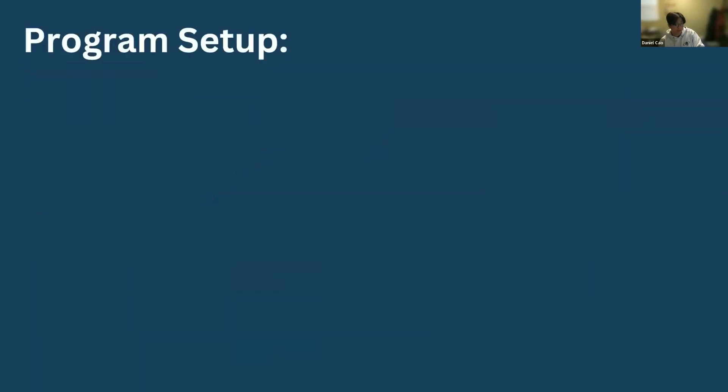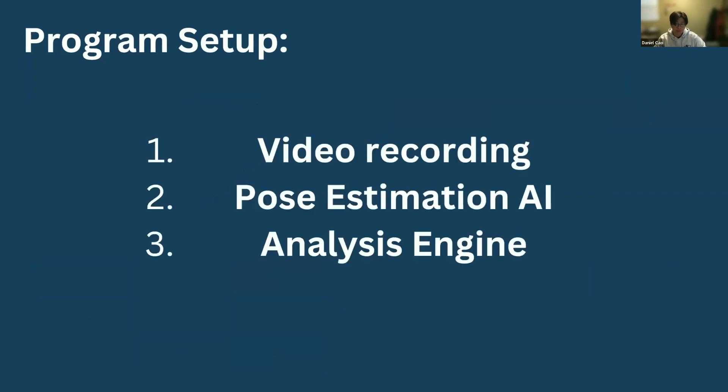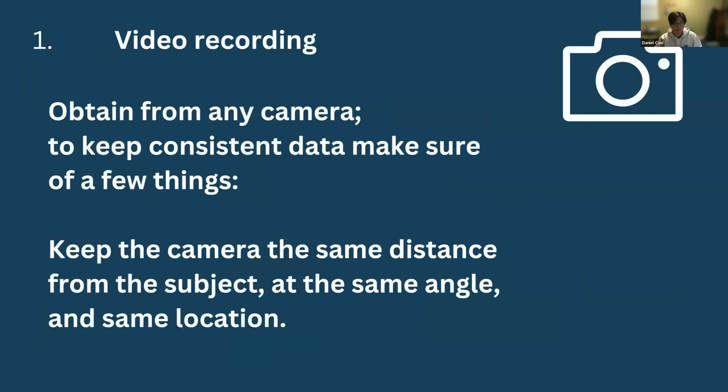And the setup to begin the program is as follows. We will need a video recording, pose estimation AI, and lastly, an analysis engine. And the first step, the video recording part was pretty simple. We obtain a video from any camera, but to make sure the distance data is consistent, we have to consider a few things, which is keeping the camera the same distance from the subject at the same angle and at the same location. And other than that, everything is pretty straightforward. So I ended up doing this at my local aquatic center with a few friends, and I just was able to record from the same distance every time and feed that into the data.